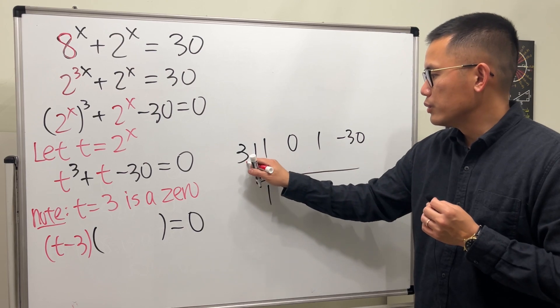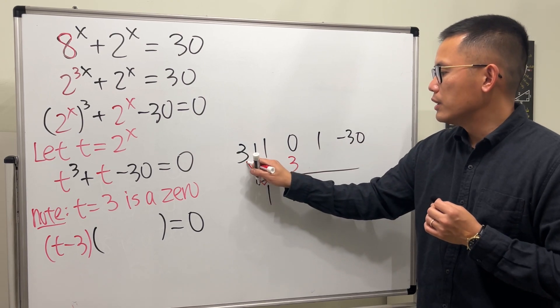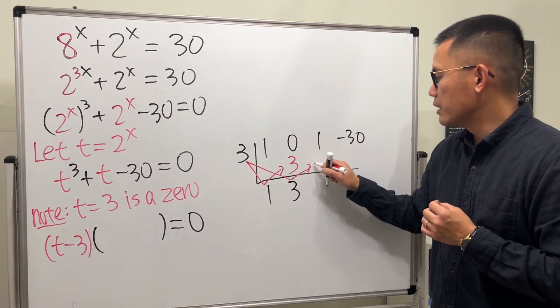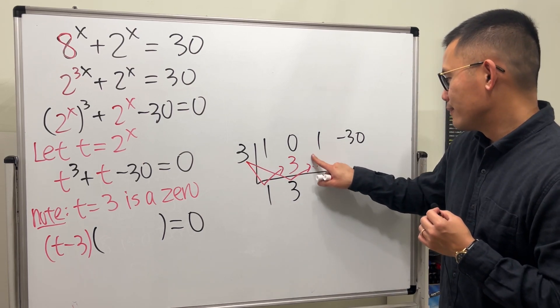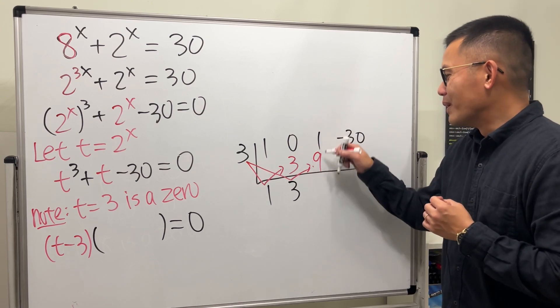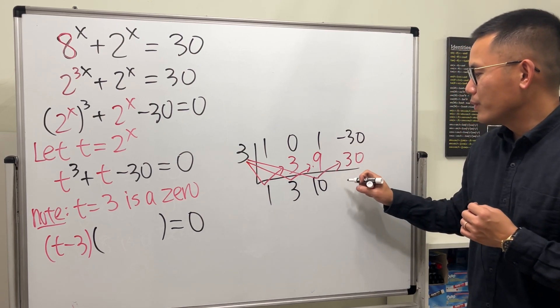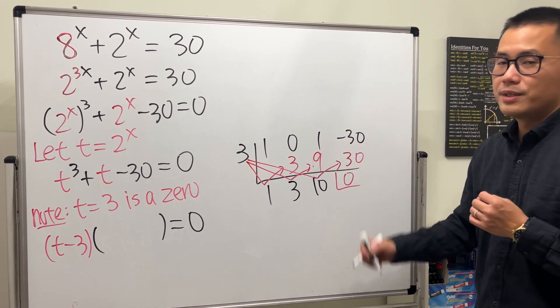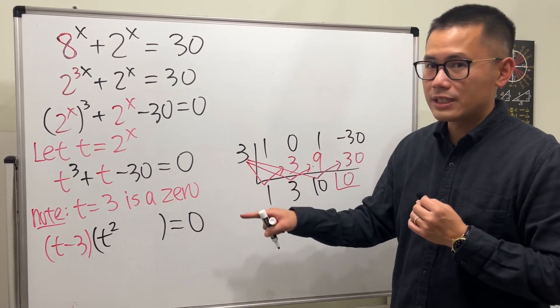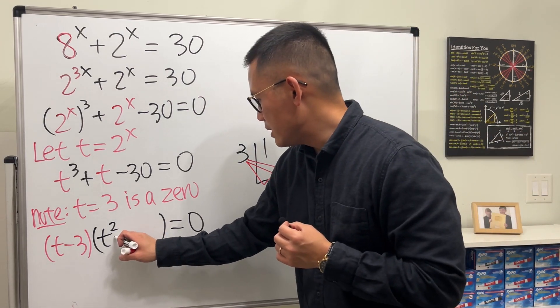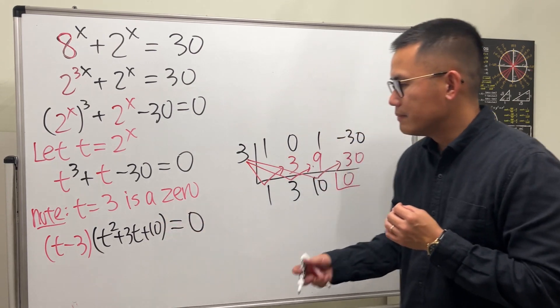Since we know 3 is a zero, we will put the 3 right here and proceed with the synthetic division. Bring down the 1, do 3 times 1, put it here, add them up, which we get 3. Continue, 3 times 3 is 9, put it here. 1 plus 9 is 10, and then 3 times 10 is 30. Add them up, we get 0, the remainder is 0. So these right here, we have t squared, the power goes down by 1, and the next is plus 3t, and then plus 10.